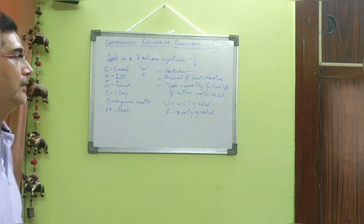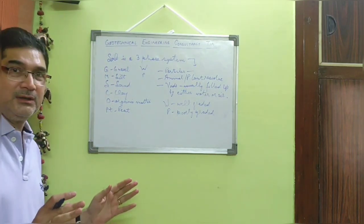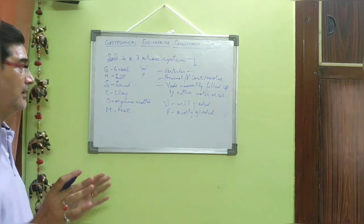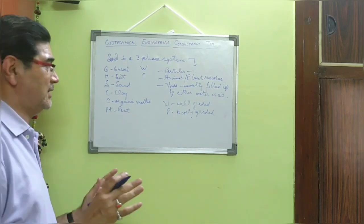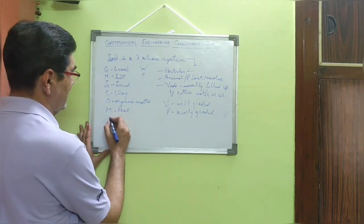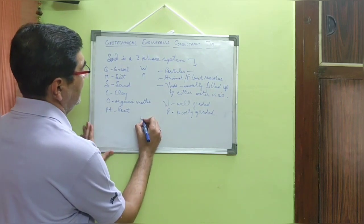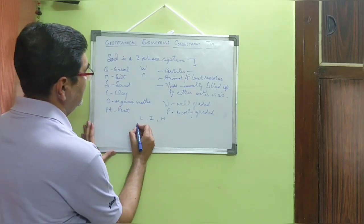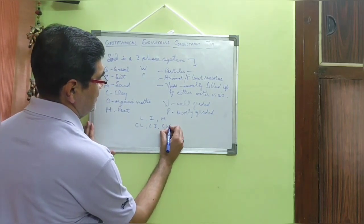So this is what I wish to explain you in the introduction section, in the introductory section, because I will go step by step. And the kind of soil when you define them, they are basically defined as with further suffixes as L, I, and H. Say for example, this can be written as CL, CI, CH, or